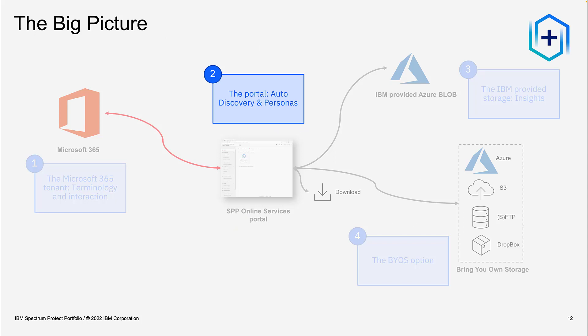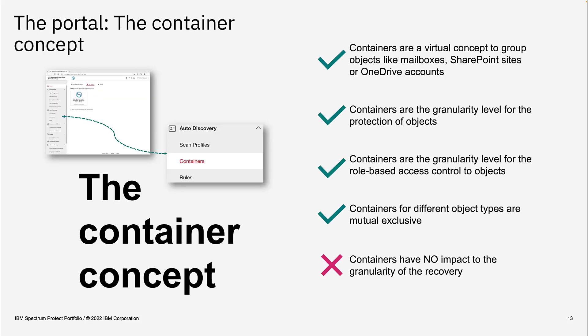The next area is the portal itself, focusing on auto-discovery, which introduces key terms used throughout the portal, and the personas that play a role. The most important concept implemented in SPP Online Services is the so-called container concept. The container concept is used everywhere in the portal for many different functions — it is a virtual group of objects.